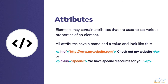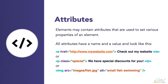Here's another example. I have a paragraph with a class attribute. The attribute value is set to special. And then here's another one — this is an image element. The image element actually contains multiple attributes. You can see that I have both a source attribute and an alt attribute. Each of the attributes follows the pattern: the equal sign followed by the attribute value.